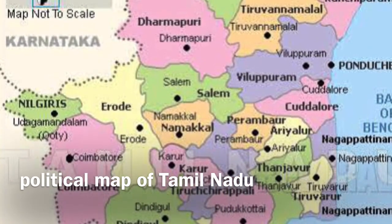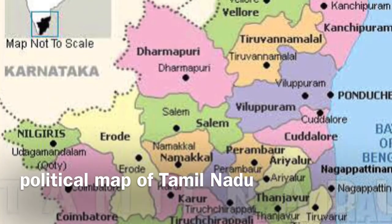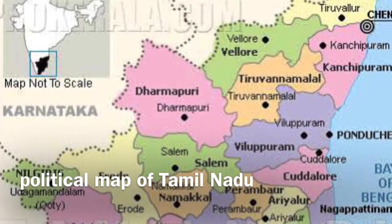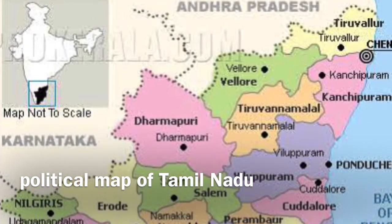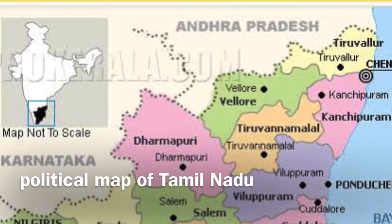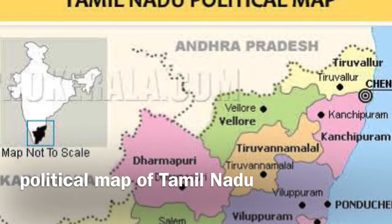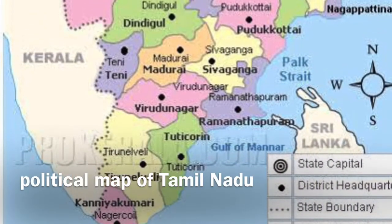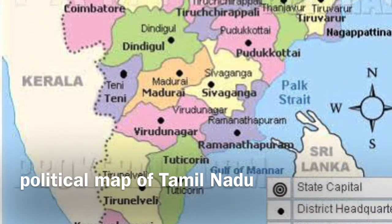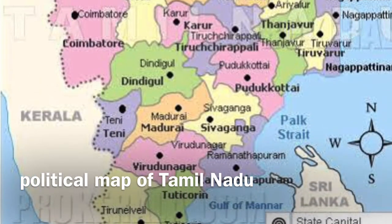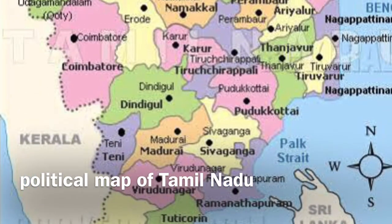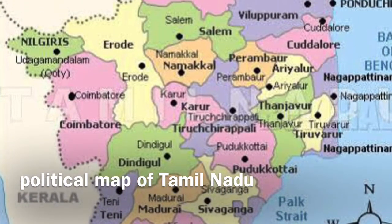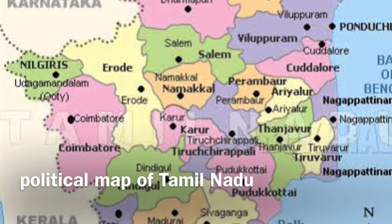The Gulf of Mannar and Palk Strait separate Tamil Nadu from the island of Sri Lanka. The state has a 940-kilometer-long coastline, the second longest in India after Gujarat. Gujarat ranks first and Tamil Nadu ranks second in the longest coastline in India.